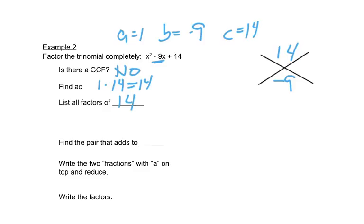So we want to list all our factors of 14. That's 1 times 14, 2 times 7. 3 doesn't go in, 4 doesn't go in, 5 doesn't go in, 6 doesn't go in, and 7 we already have written down. So that's all the possibilities.